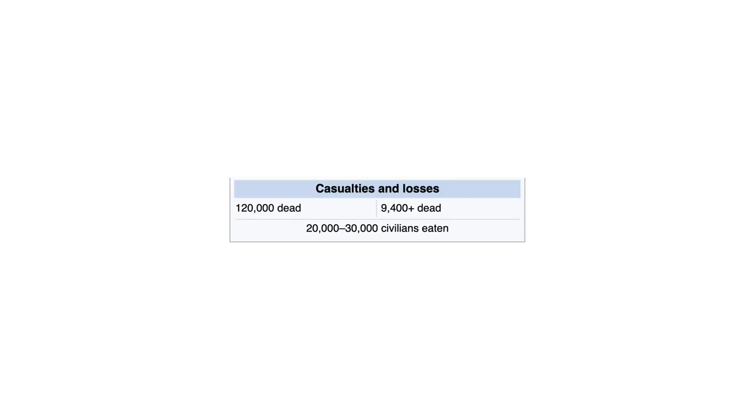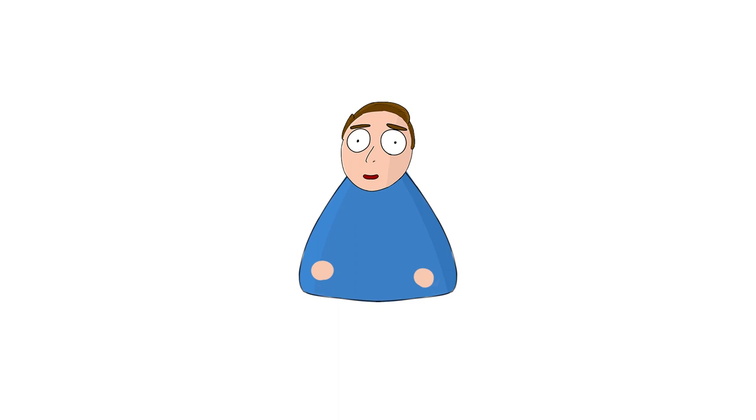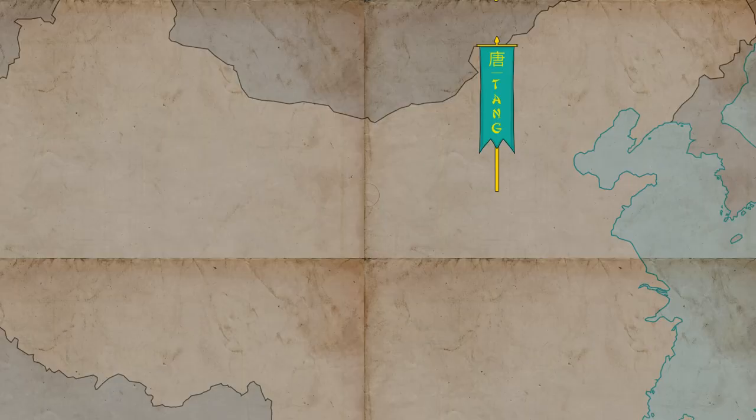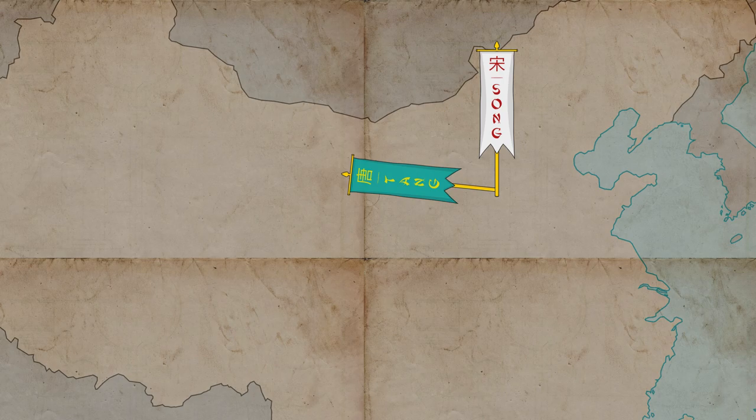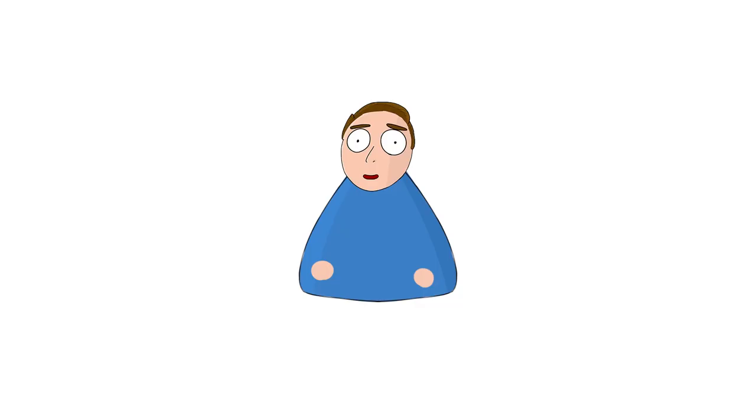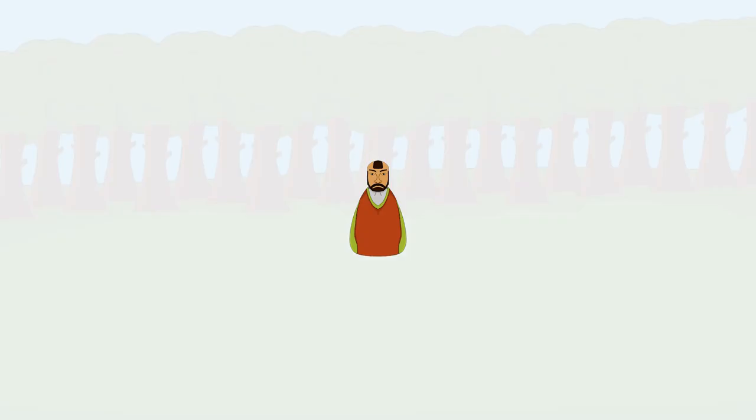But to understand how 30,000 people got eaten, we need to focus only on one particular rebellion: the An Lushan rebellion. This rebellion happened during the Tang dynasty. We will be focusing on a lowly Chinese officer of the imperial army named An Lushan, who was given command over a small group of soldiers. He was explicitly told by his commander not to attack the enemies.